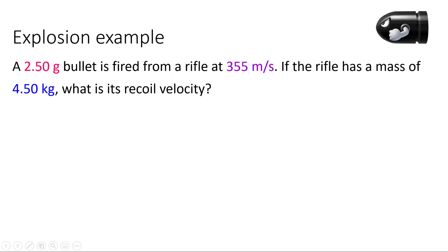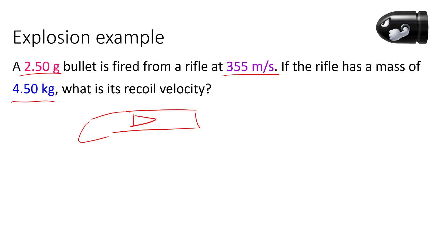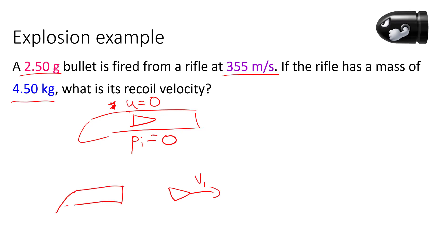Next question — this is an explosion example. A 2.50 gram bullet is fired from a rifle at 355 meters per second. The rifle has a mass of 4.50 kilograms. What is its recoil velocity? Before the explosion, the bullet and rifle are together and not moving, so their initial speed is zero and initial momentum is zero. After: the bullet moves in one direction at V1, and the rifle moves in the opposite direction at V2.